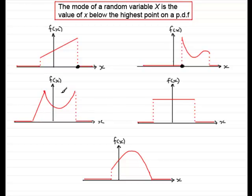When we have this particular probability density function, we've got two points which are equally at the same height. So this one has two modes. The first mode would be this value directly under the highest point here, and another one here. And we often refer to this as being bimodal, having two modes.